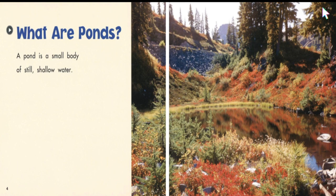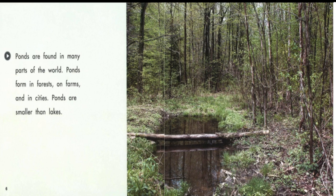What are ponds? A pond is a small body of still, shallow water. Ponds are found in many parts of the world. Ponds form in forests, on farms, and in cities. Ponds are smaller than lakes.